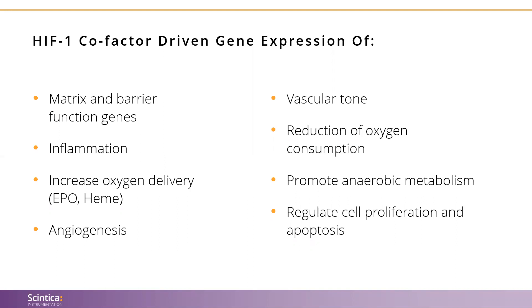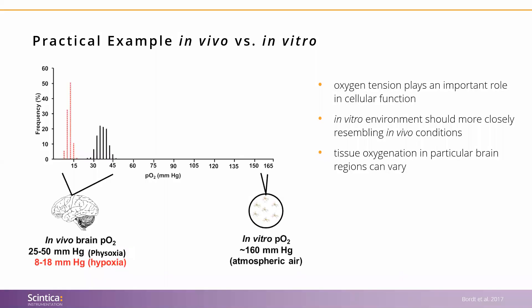Since the cell is closer to the natural state, you're also much better able to assess what may actually be happening in the in vivo state. Here I've chosen an example from a paper by Bort et al. in 2017, just to make a couple of points before we move to the last section of this presentation. The image we're looking at is the frequency graph of oxygen partial pressure distribution within the mouse cortex under physoxic and hypoxic conditions.